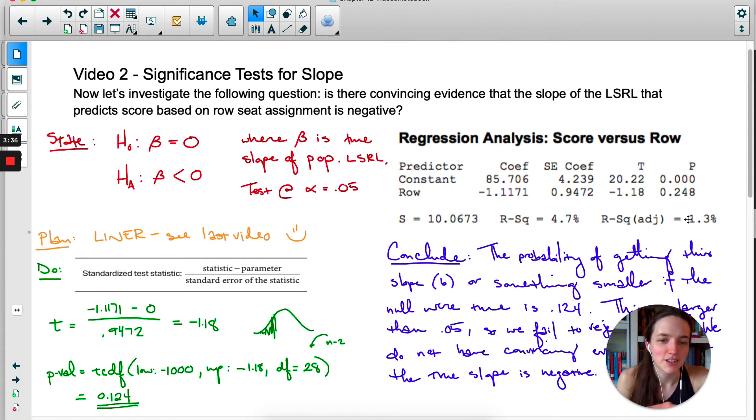So the Minitab output actually gives you two extra bonus pieces of information. It gives you the t-score for whatever slope you have, and it gives you the p-value for the two-sided significance test, which is nice.